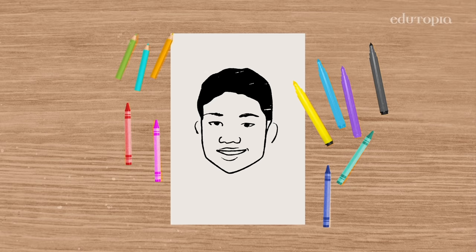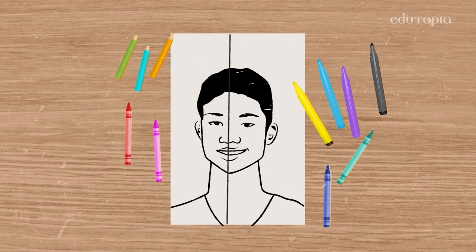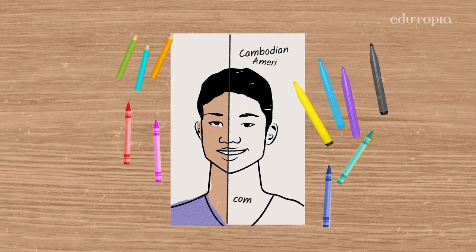They draw their head and shoulders, then they draw a line down the middle of their face. I tell them to color one side with their skin tone and the jacket or shirt they're wearing. On the other side, I want them to add in their identity markers. Kids kind of tell their own story — they tell me who they are through a picture.